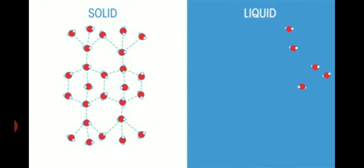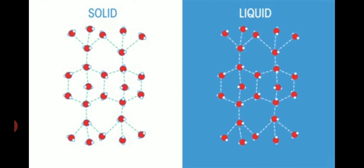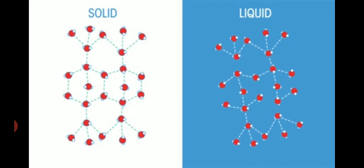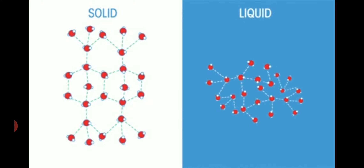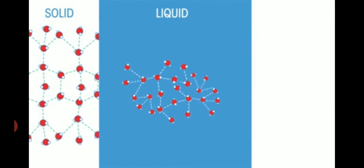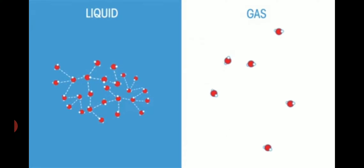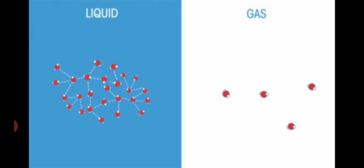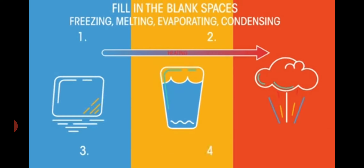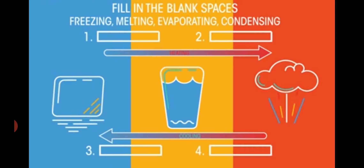This happens because in the solid state, the molecules are tightly bonded with each other, which is loose in the liquid state. The bond is not very strong in the liquid state, but in solid state, all the molecules are very strongly bonded. In the gaseous state, the molecules are not at all bonded with each other — they are able to move freely here and there wherever they require.